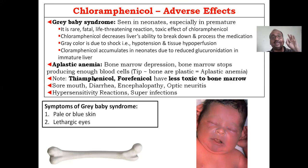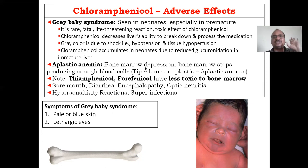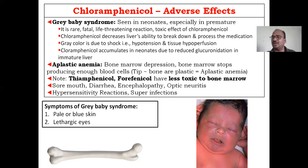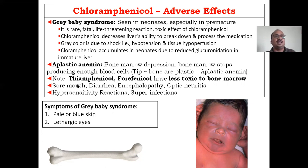Aplastic anemia is a very important and specific side effect — bone marrow depression. Bone marrow is responsible for blood cell production, but it gets depressed and stops producing enough blood cells. A memory aid: imagine plastic bones that cannot create red blood cells — 'aplastic' means your bones become like plastic, unable to produce red blood cells. Thiamphenicol, which is similar to chloramphenicol, is less toxic to bone marrow compared to chloramphenicol — an important comparison point.